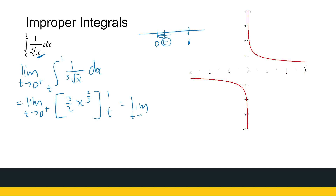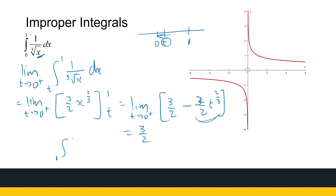So we get the limit as t approaches 0 from the positive side of: substituting 1 gives 3 over 2, minus substituting t gives 3 over 2 times t to the power 2 over 3. As t goes towards 0, the first part is the constant 3 over 2, and t to the power 2 over 3 goes to 0, so that whole term vanishes. Therefore, the integral from 0 to 1 of 1 over the cube root of x dx converges, and its value is 3 over 2. You must be able to calculate limits to work through this section.